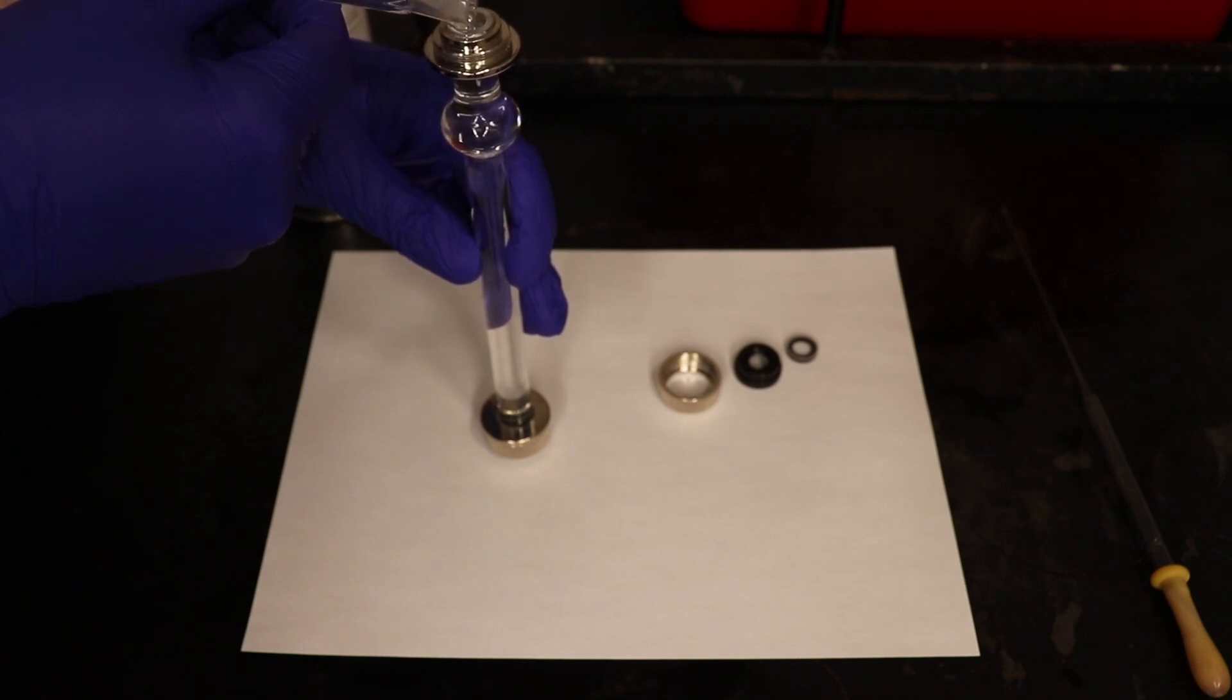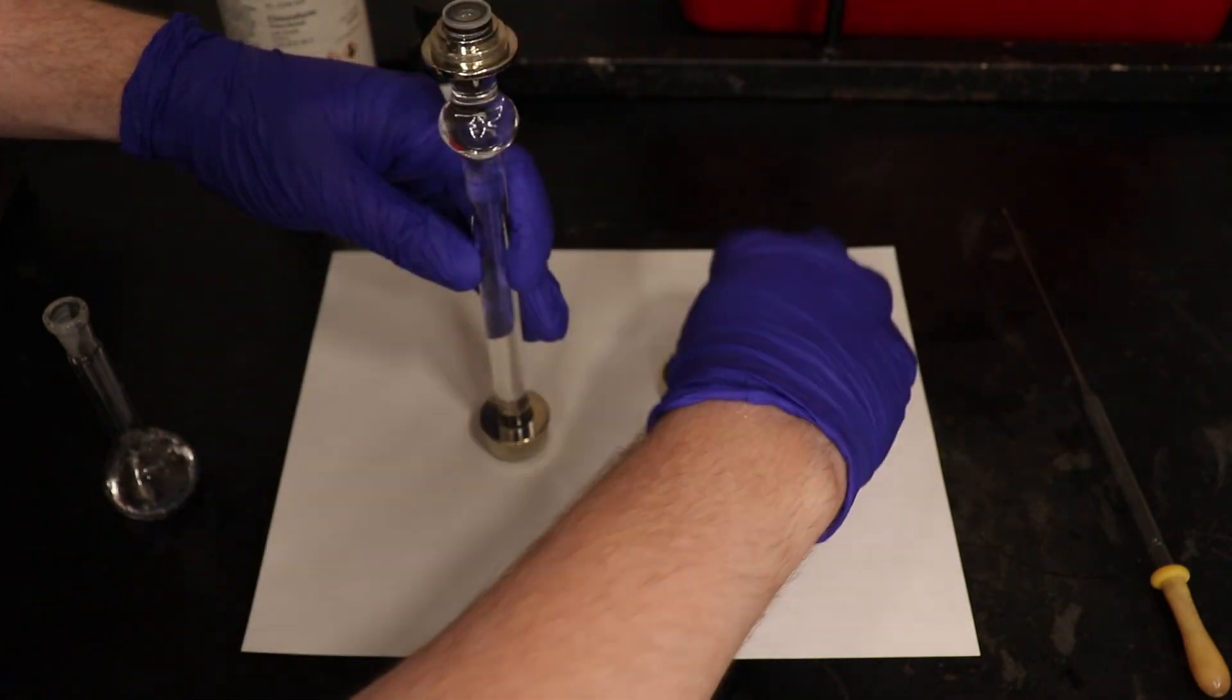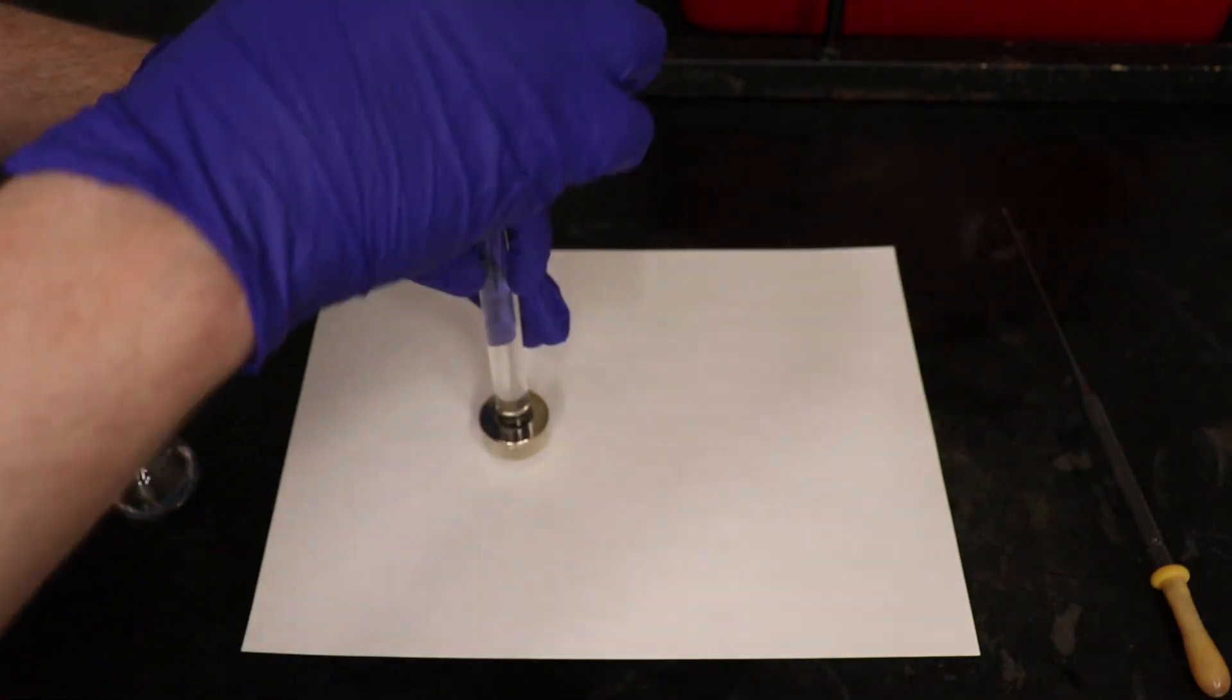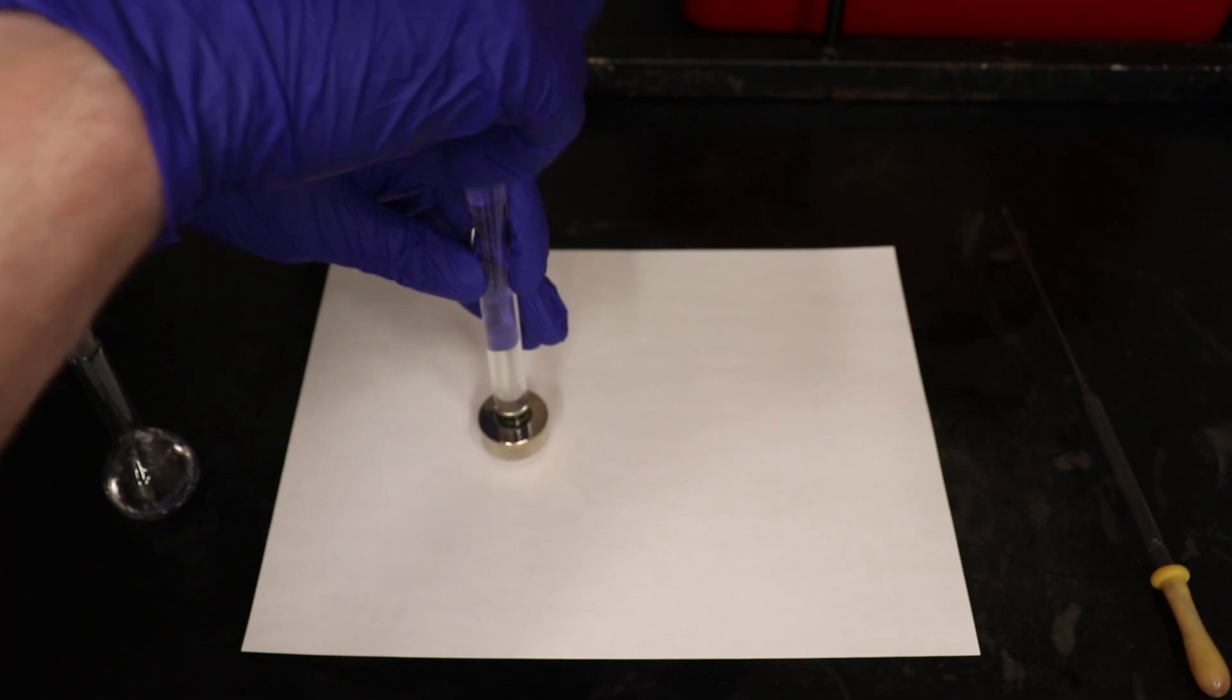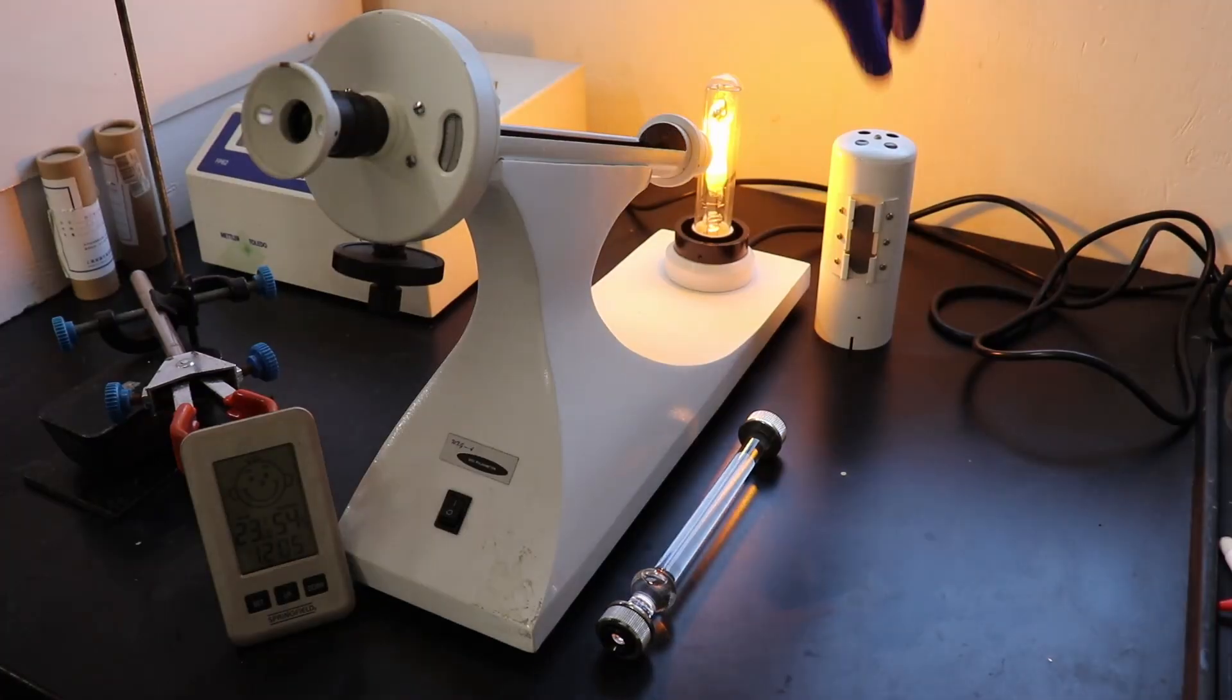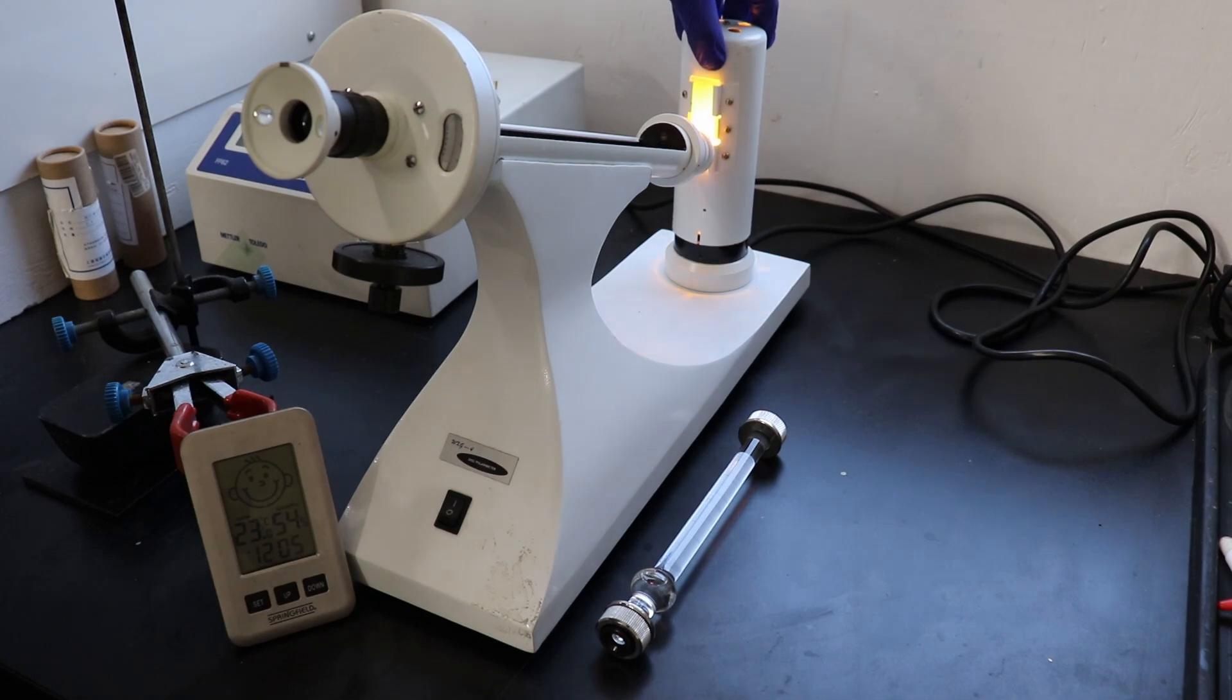To acquire this measurement, I first prepared a solution of the sample in chloroform with a concentration of about 4.24 grams per 100 mL. This solution was then transferred into the polarimeter cell and loaded into the polarimeter.